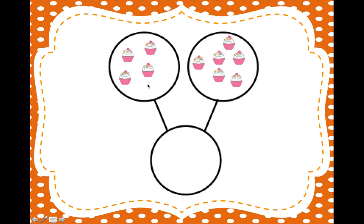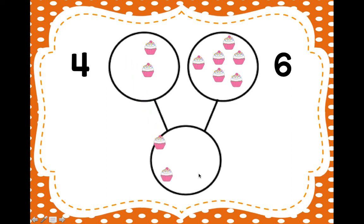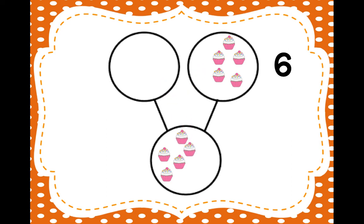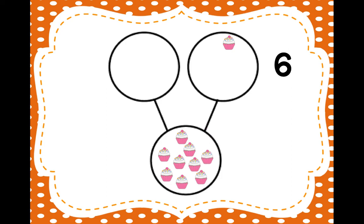Here's another one. Ready? How many cupcakes are in this circle? One, two, three, four. And over here we have one, two, three, four, five, six cupcakes. Let's put all the cupcakes together down here in the big circle. Ready? One, two, three, four. And over here we have one, two, three, four, five, six.